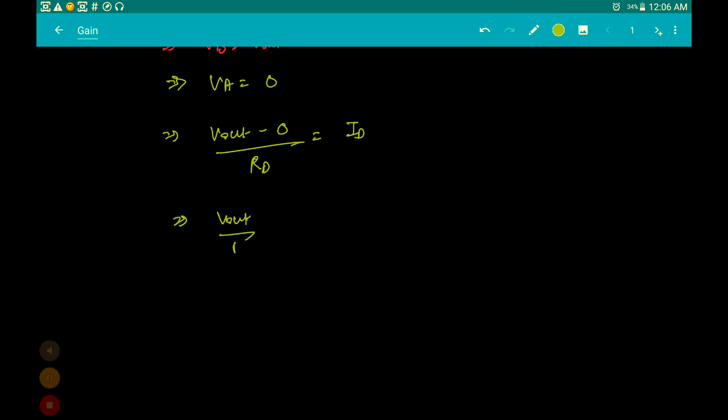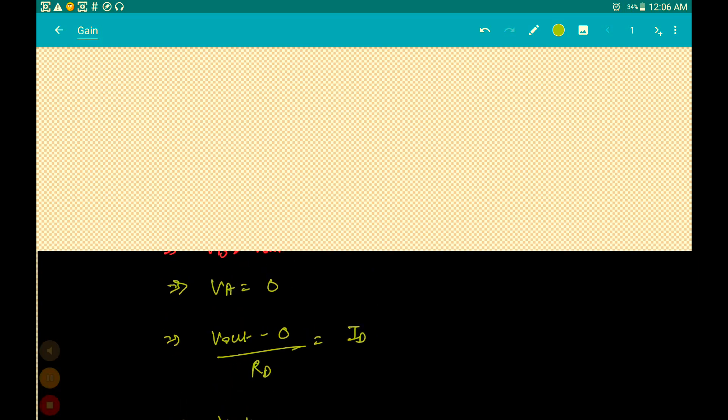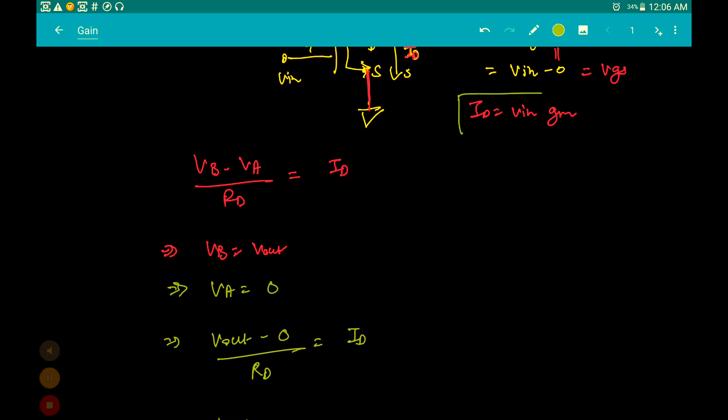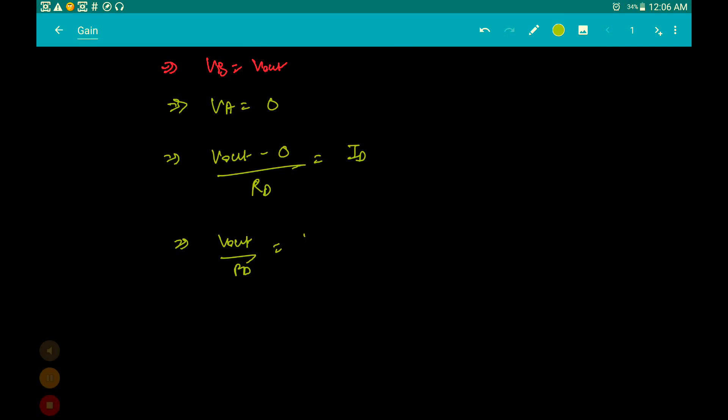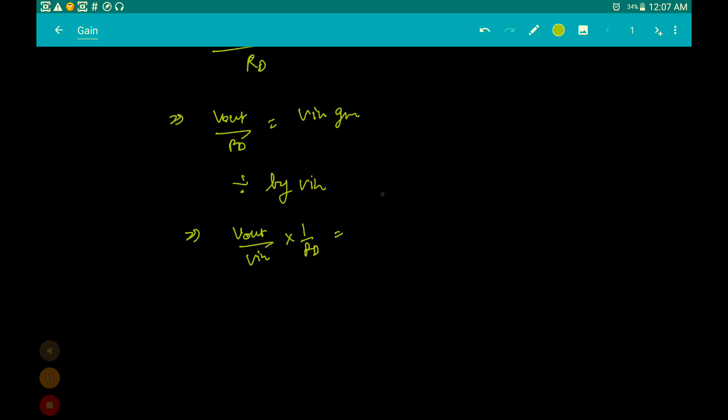Vout upon RD. Put in the value of ID. What was the value of ID? ID is equal to VIN into gm. So I divide both sides by Vin. This becomes Vout upon Vin into 1 by RD is equal to VIN gm by VIN. This Vin gets cancelled. Vout upon Vin equals gm into RD.